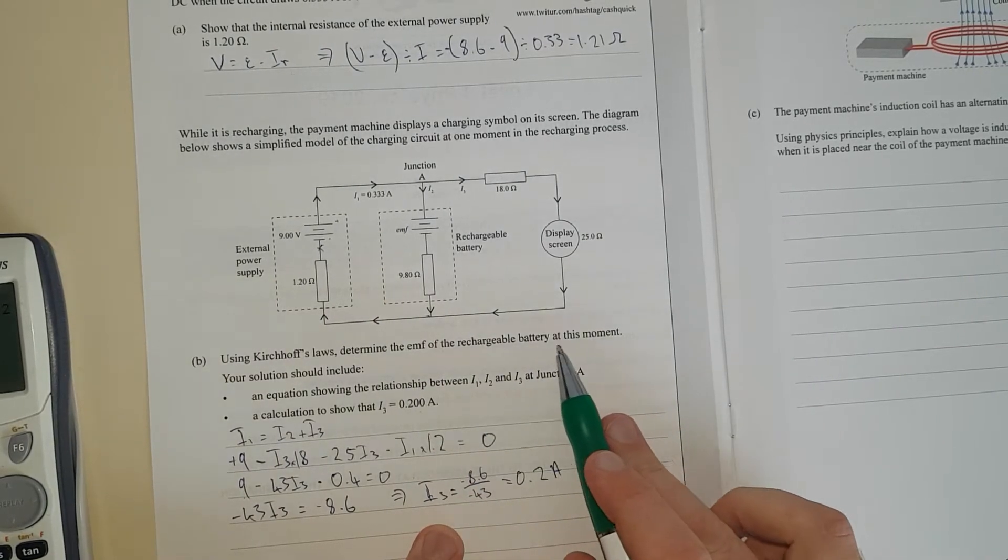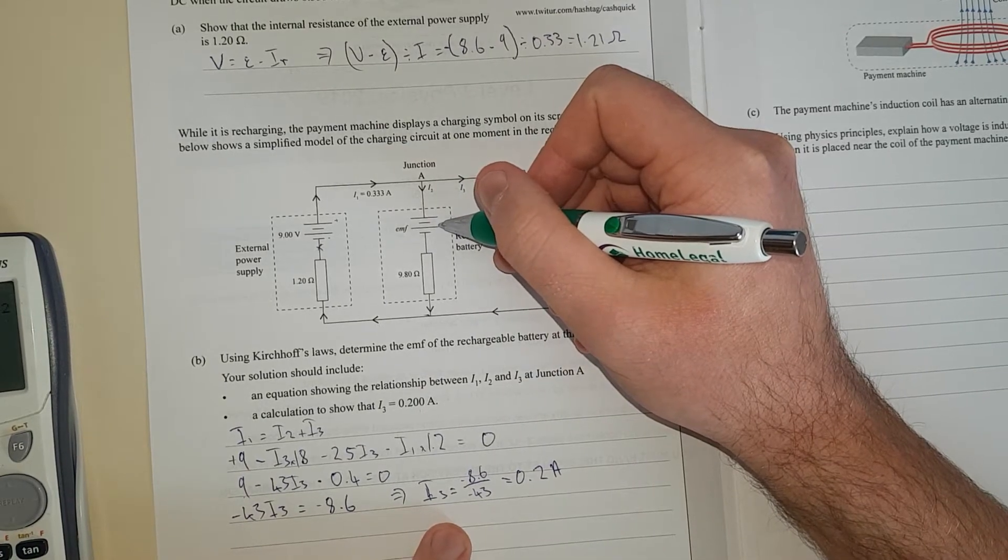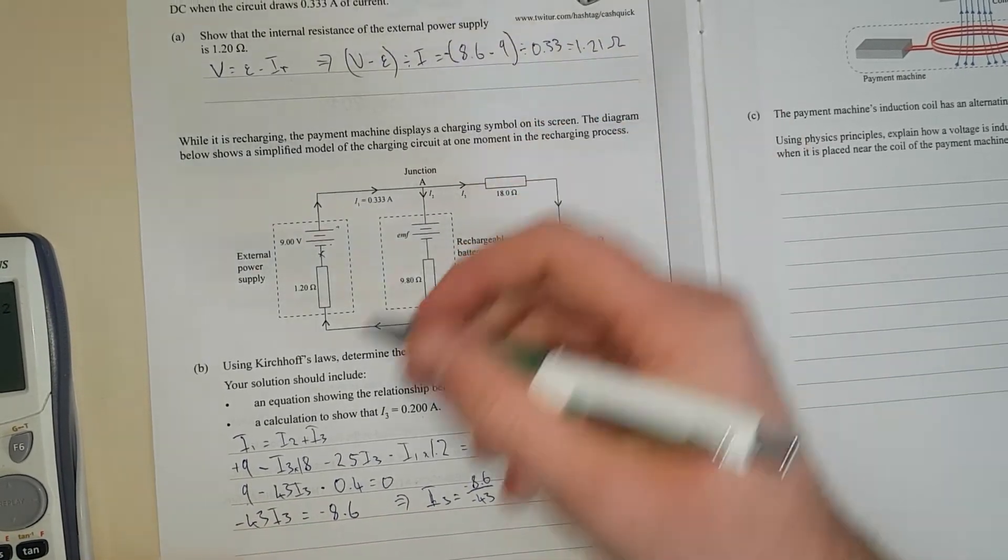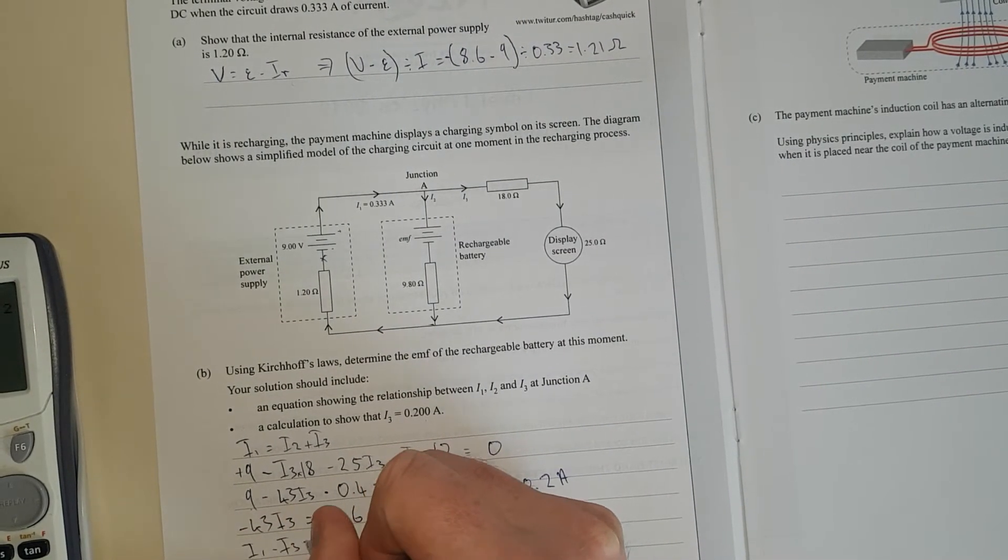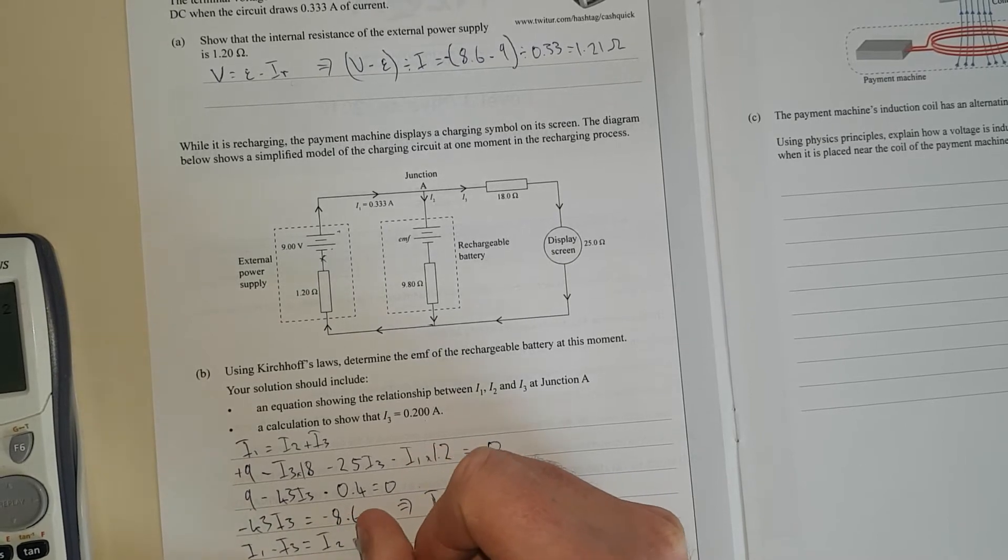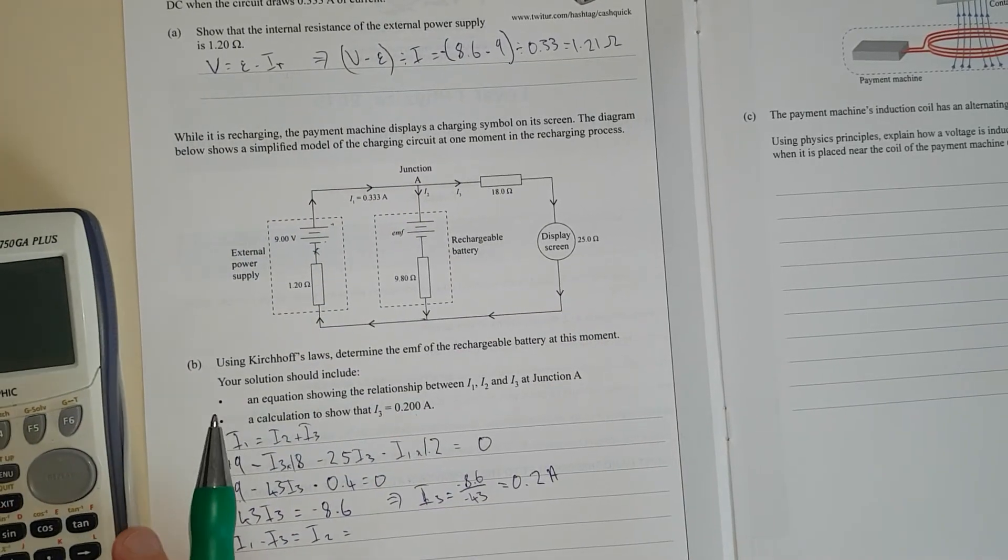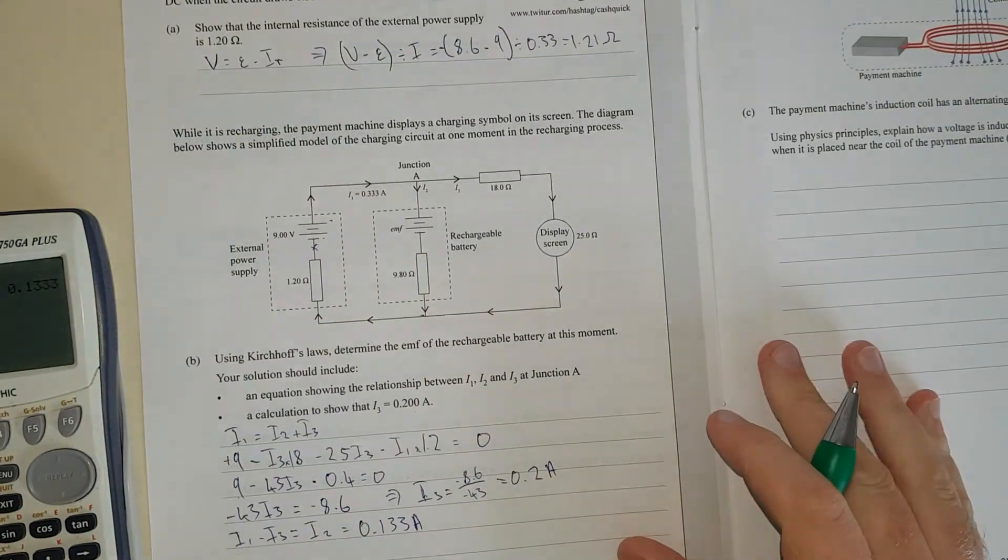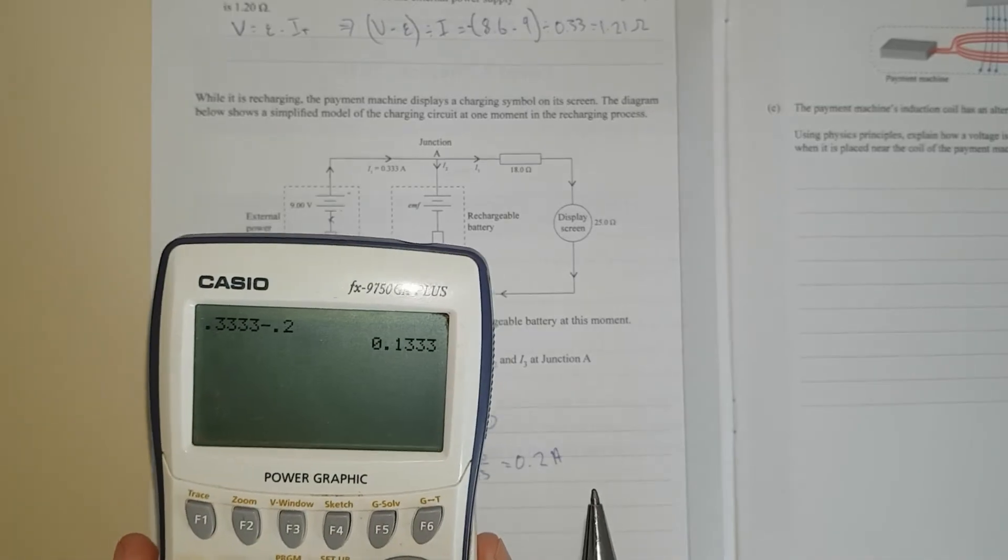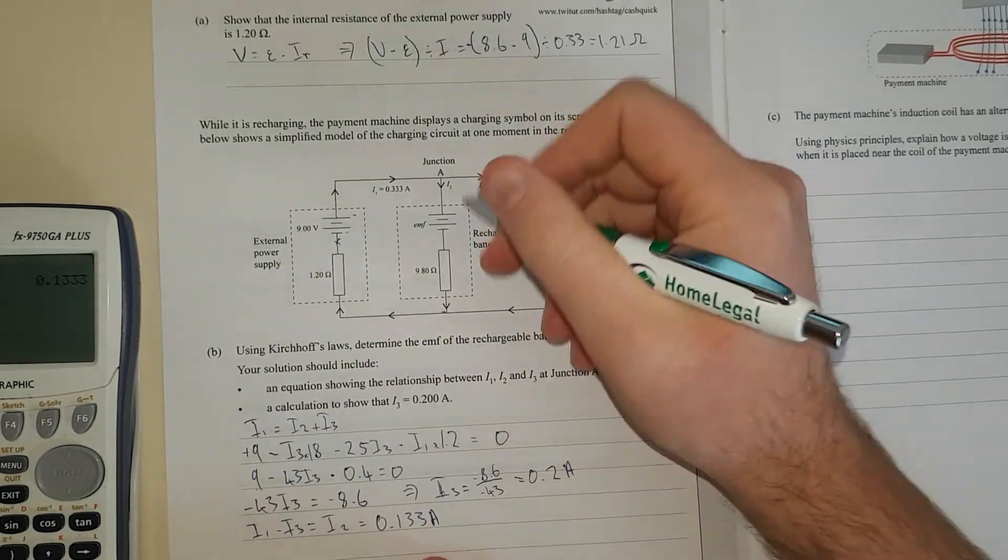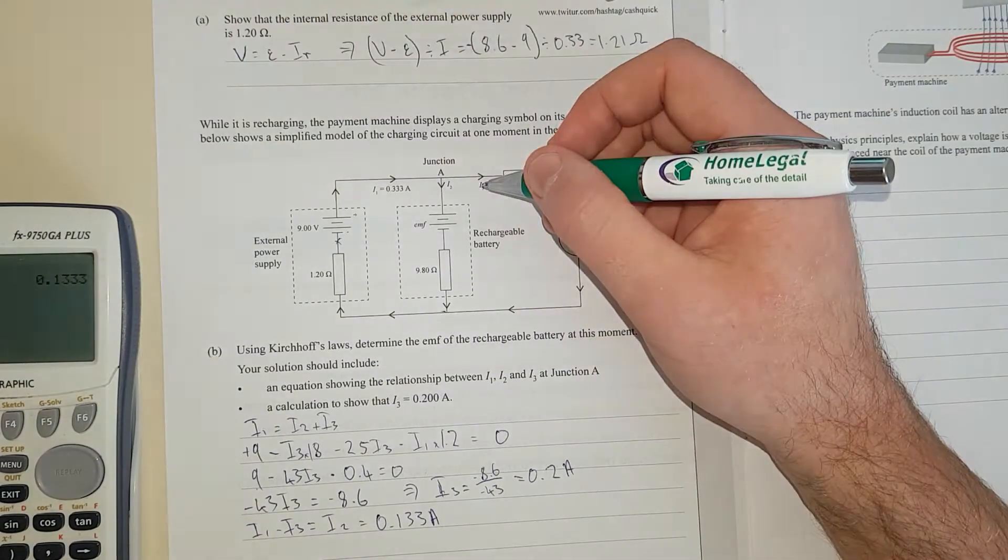We need to determine the EMF of the battery at this moment. We need to determine this voltage here. Now we can figure out what I2 is, because I1 minus I3 equals I2. What is I1? I1 is 0.33. So we get 0.133 amps, because it's I1 minus I3. Now I've got this current flowing through here. All I need to do is another loop.